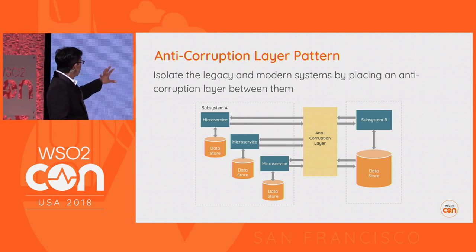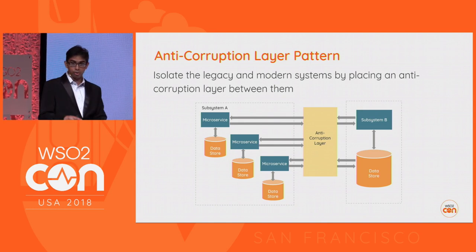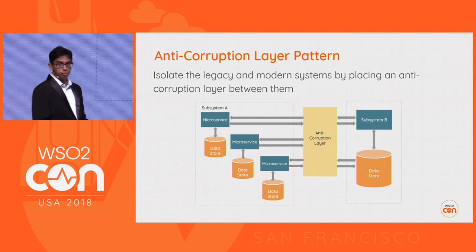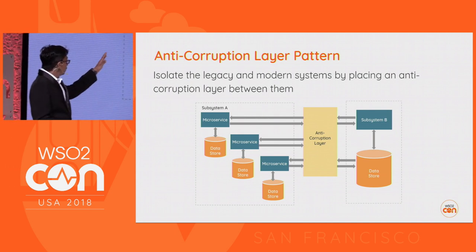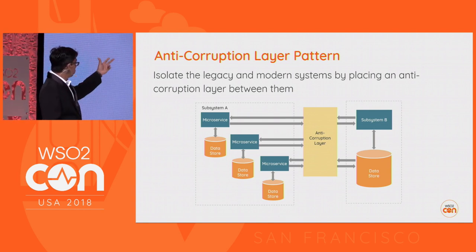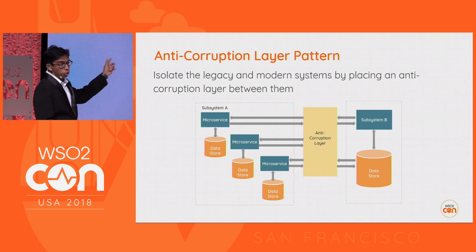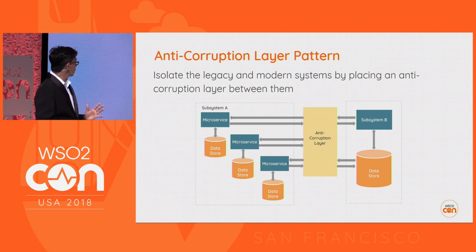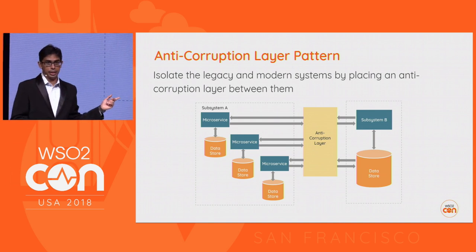You can build an anti-corruption layer between these two subsystems so that to implement any functionality in one subsystem, you don't have to change the other one. This layer does all the transformations and mappings between two different architectural styles.